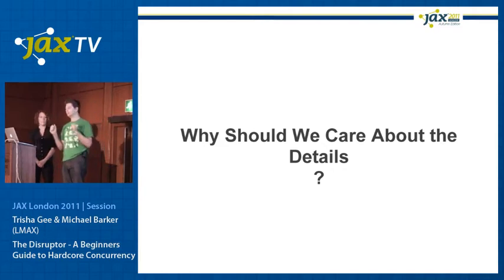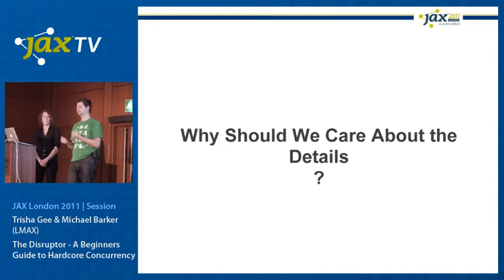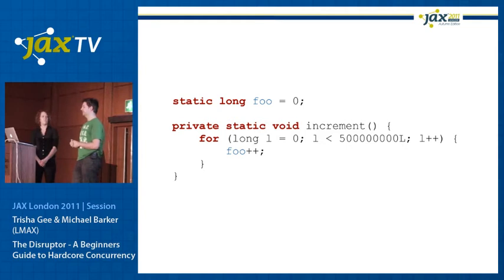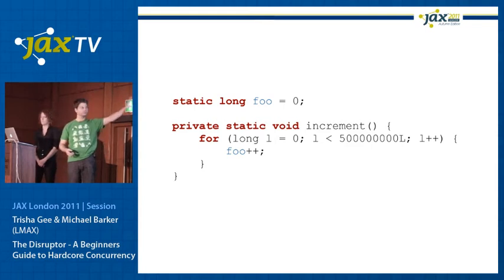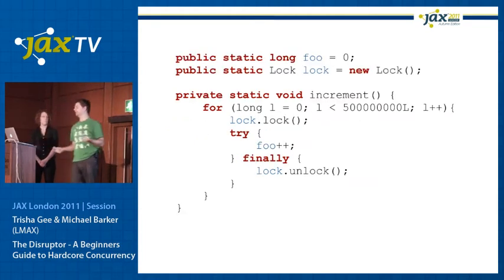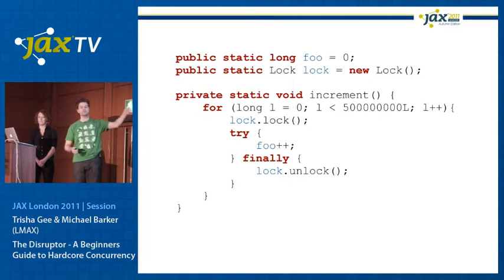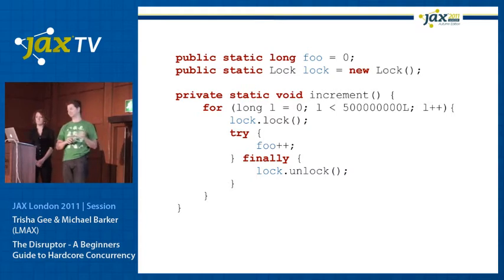The first and most important concept to understand when talking about concurrency, especially from the performance perspective, is understanding contention. Here's a slightly contrived but illustrative example. A very simple piece of code: iterate half a billion times and increment a value in a single thread. If we wanted to make that multi-threaded, one approach is to take out a lock each time. This is a horrible piece of code, and the number of times you see this in examples when somebody tries to explain how concurrency works is really annoying — even some really good people, like the guys developing Google Go, have this as their first concurrent code example.